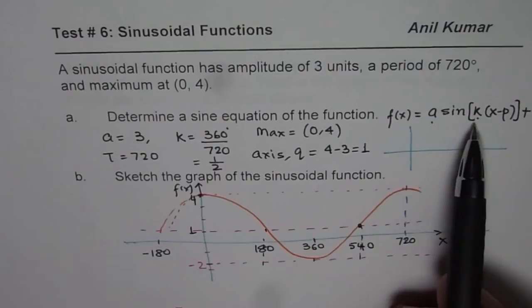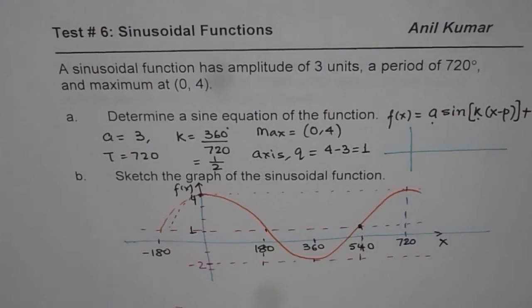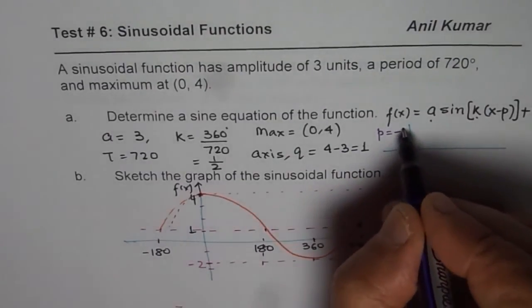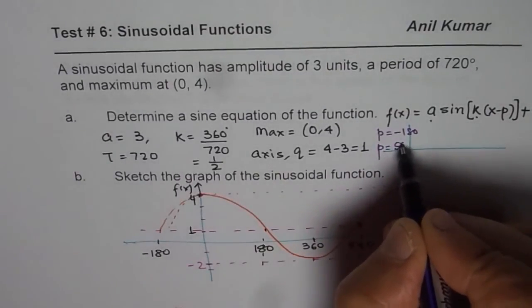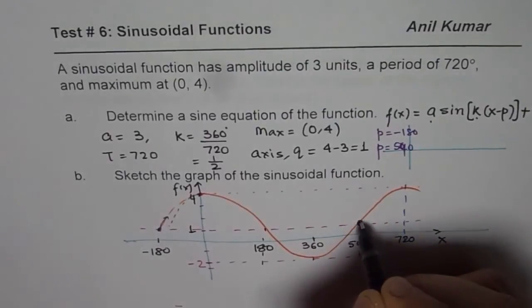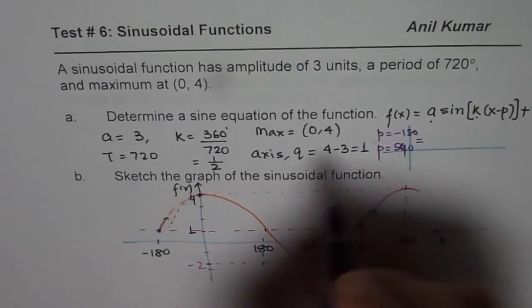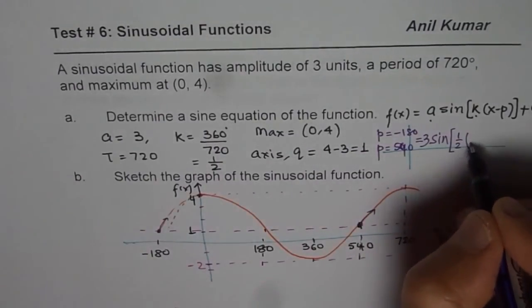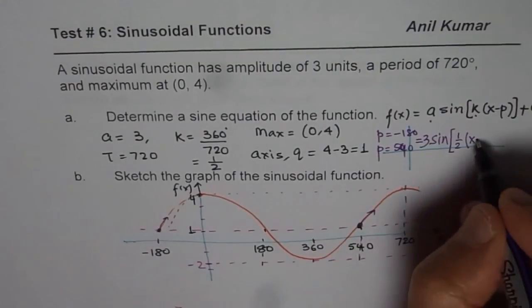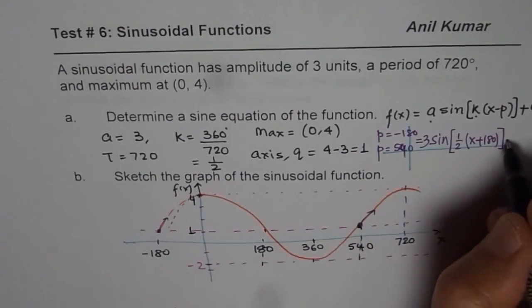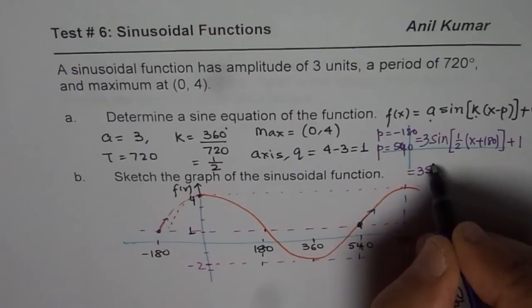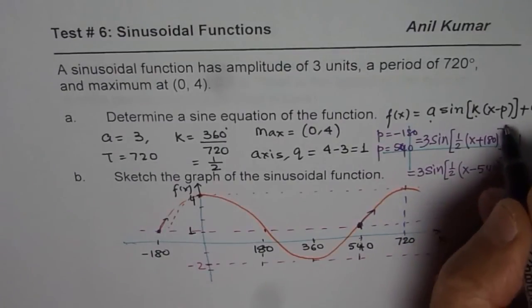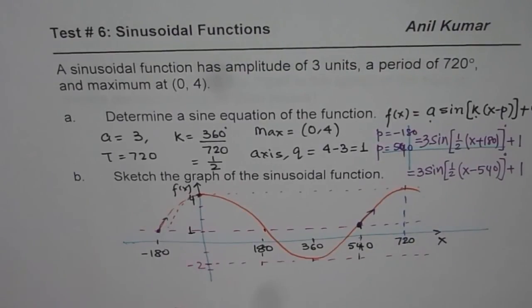I can write two functions for the sine wave. P could be equal to either minus 180 or P could be equal to plus 540. We could consider both starting points. I could write my function as: 3 sine of half(x plus 180) plus 1. I could also write the same equation as: 3 sine half(x minus 540) plus 1. This is all in degrees. That is how you can actually write down the equation.